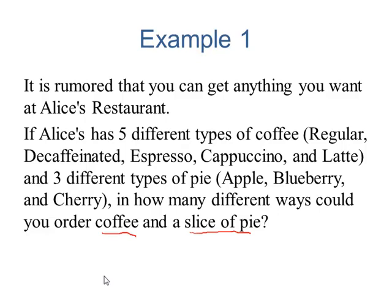This choice consists of two steps, selecting a coffee and a slice of pie. We want to determine how many ways we can select the coffee, which was 5, the number of different ways we could select the pie, which was 3, and we'll multiply. Five times three means there are 15 different ways you could order a coffee and a slice of pie. Let's try one more.